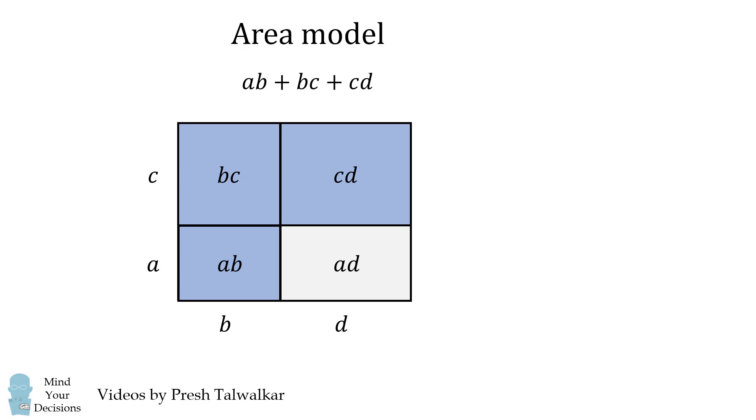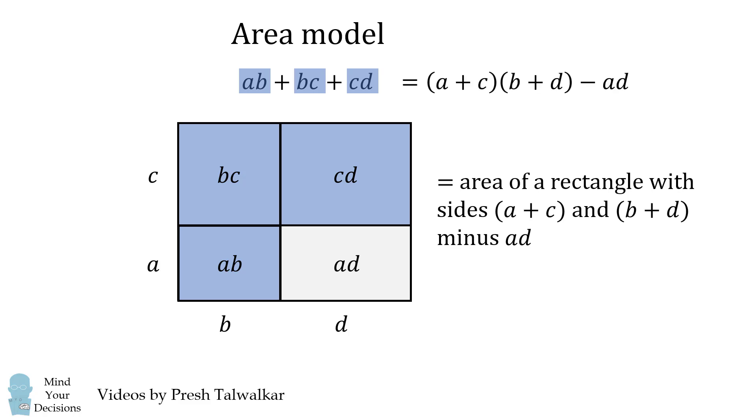What the area model shows us is that AB plus BC plus CD is the sum of the blue areas, and that will be the area of the entire rectangle, which has sides A plus C and B plus D, minus the small rectangle AD. We thus get the following algebraic identity.